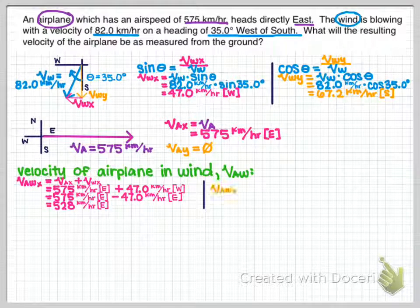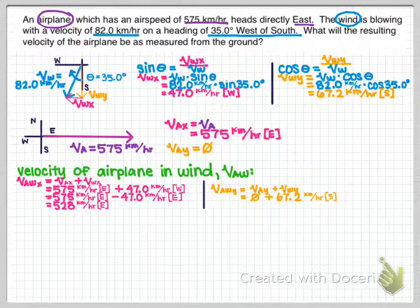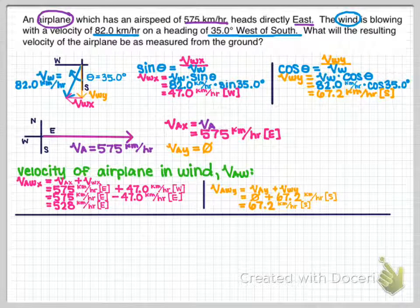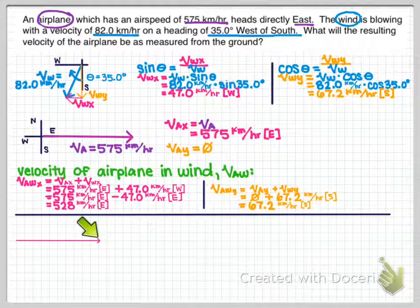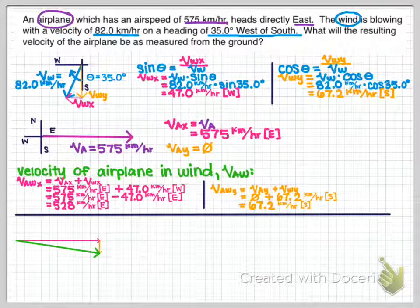Now the velocity of the airplane in the wind in the y-direction: I add the y-components. The airplane is only heading straight east, so the only y-component is the velocity of the wind in the y-direction — 67.2 kilometers an hour south. So even though the airplane's own heading has no southern pull, the wind is drawing the airplane south. Drawing it out: horizontal vector of 528 kilometers an hour east, then tip to tail I drop south 67.2 kilometers an hour, and the resultant is the velocity of the airplane in the wind.